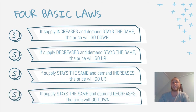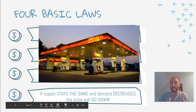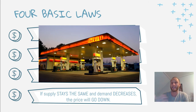The fourth law: if supply stays the same but demand decreases, the price will go down to try to sell the extra supply remaining. A great real-world example right now is gas stations. Because of COVID-19, gas is really cheap because it's not in as high demand — most people are stuck at home and not driving. They still have the supply of gas, so they're charging less.